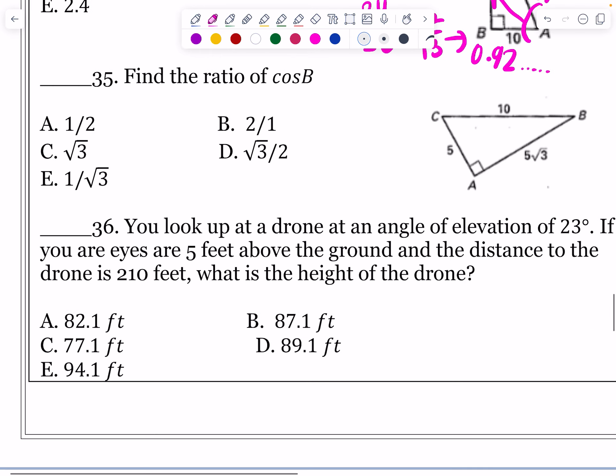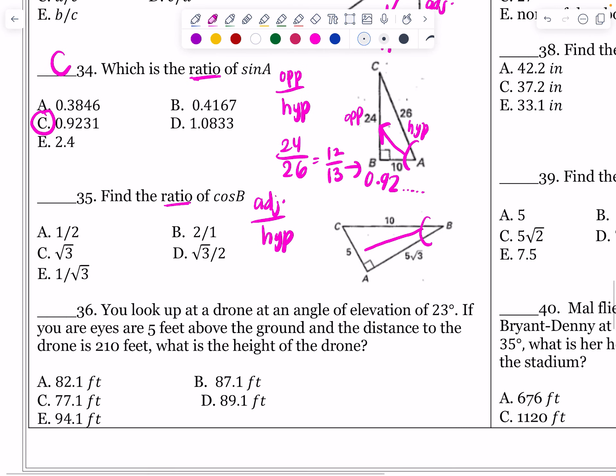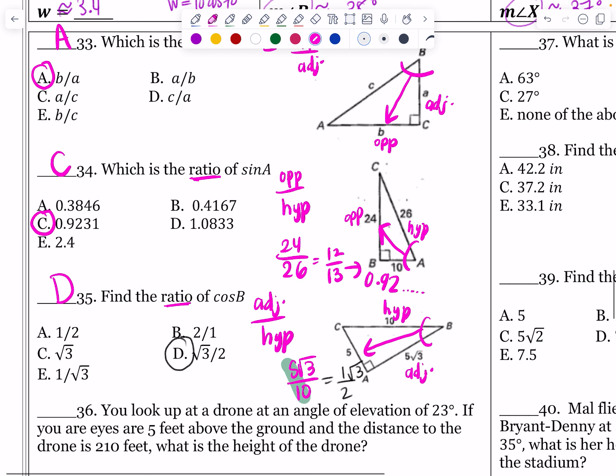Number 35 says find the ratio, so back to the fraction for the cosine. What is cosine? Cosine is adjacent over hypotenuse. So what is my adjacent? 5 is my opposite, so it's not that. What is my adjacent? 5 root 3. My hypotenuse is 10. So that's going to be 5 root 3 over 10. What happens to the 5 over 2? We can reduce that. 5 over 10 is going to reduce to 1 half. So that's going to be 1 root 3 over 2, which is just going to simplify to root 3 over 2. So these first, 33, 34, and 35 are all finding ratios.